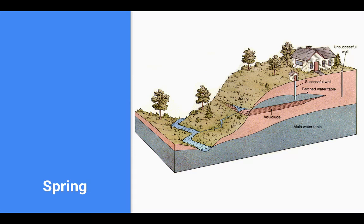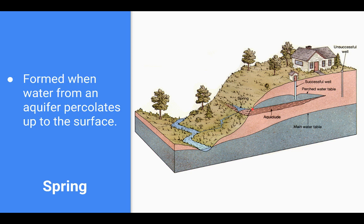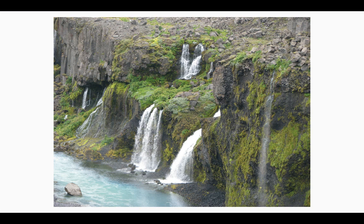Some other features we get with groundwater: a spring. We have an aquiclude — an impermeable layer, which could be clay or bedrock — that won't let the water go down. So water underground flows just like it does on land, and when it finds an opening on the earth's surface, we call that a spring. If the water meets the surface, it flows out — and you've probably seen a spring before.